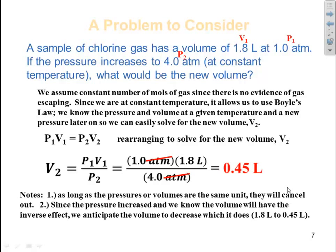As long as we put in the same units, they will cancel, so atmosphere cancels, which leaves us with 0.45 liters as volume 2. Note, as long as the pressures or volumes are the same unit, they will cancel out. Since the pressure increased and we know the volume will have the inverse effect, we anticipate the volume to decrease, which it does, going from 1.8 liters to 0.45 liters.